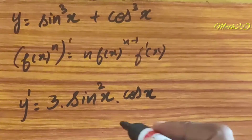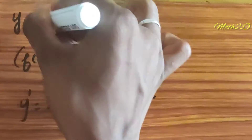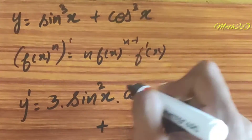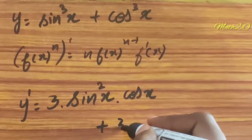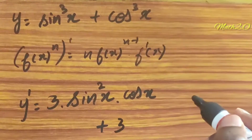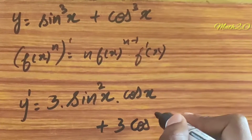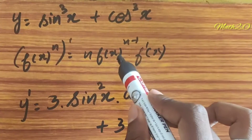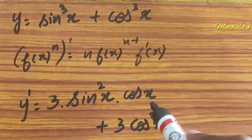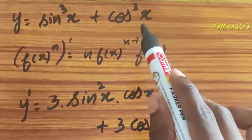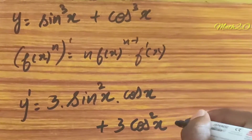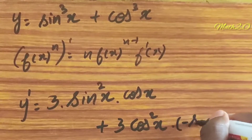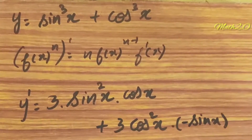Plus, differentiating cos cube x the same way: 3 into cos square x — that is 3 into f(x) power n minus 1 — into the derivative of cos x, which is minus sin x.